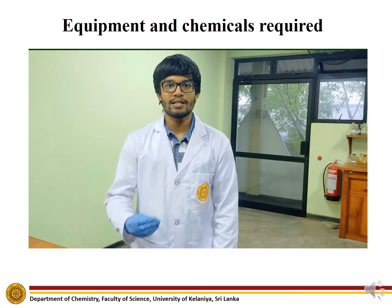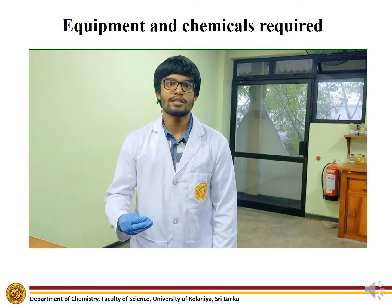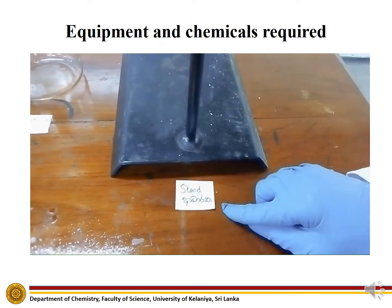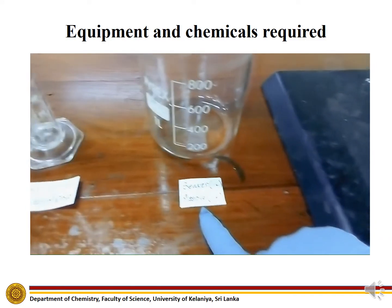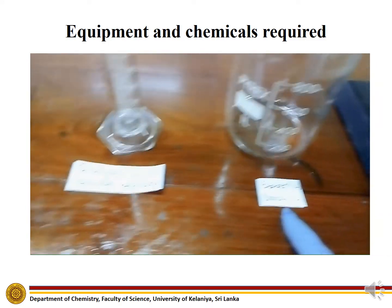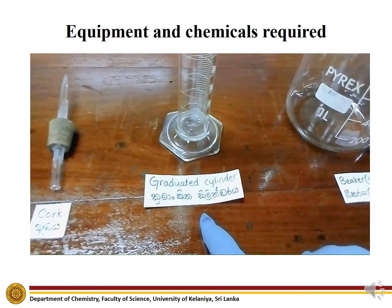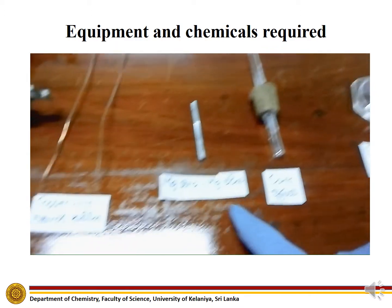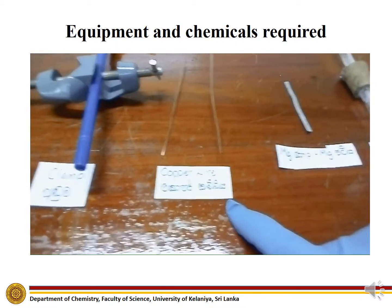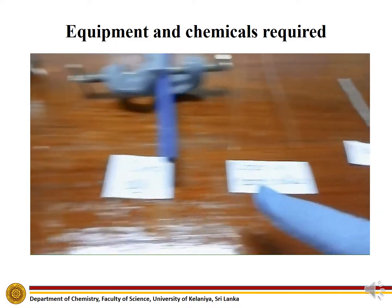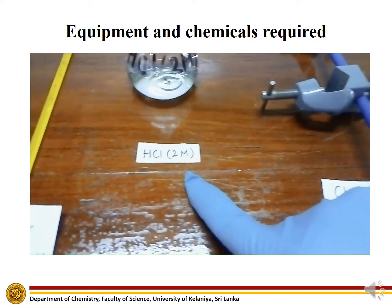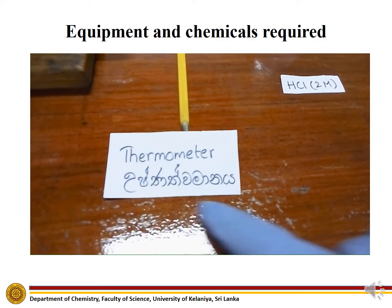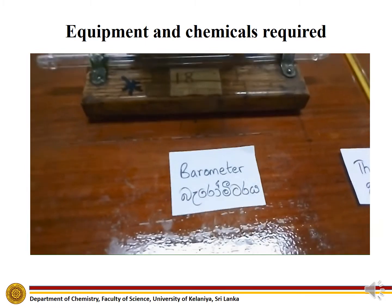These are the chemicals and equipment needed for the experiment: stand, beaker, graduated cylinder, cork, magnesium strip, copper wire, clamp, HCl, thermometer, and barometer.